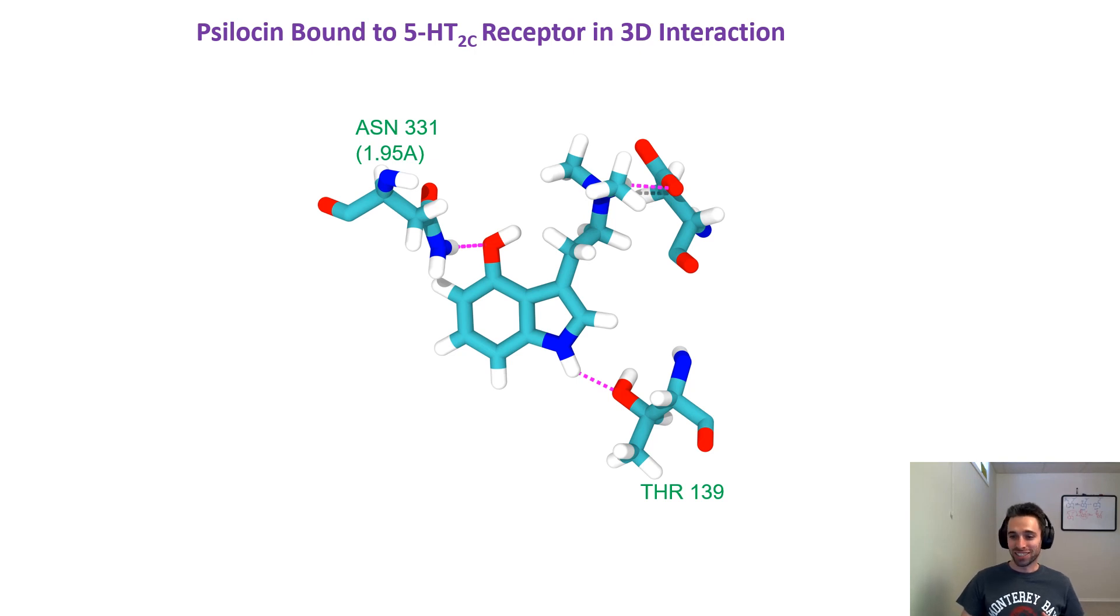The next hydrogen bond is with threonine 139. It sits at 1.99 angstroms, also a really nice, beautiful hydrogen bond. And the last one is aspartic acid 134, also just a really lovely hydrogen bond between the protonated hydrogen there on the tertiary nitrogen and the oxygen on aspartic acid 134.